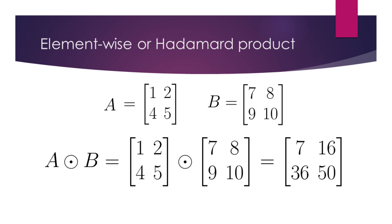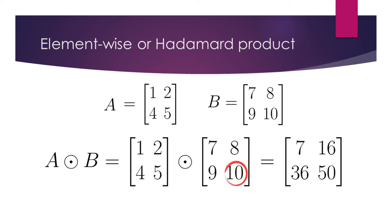Element-wise, or Hadamard product, outputs a matrix containing the product of individual elements. In our example, we have two 2×2 matrices. We multiply the elements in both matrices that have the same position and write the result for that position. For example: 1 times 7 is 7, 2 times 8 is 16, 4 times 9 is 36, and 5 times 10 is 50.